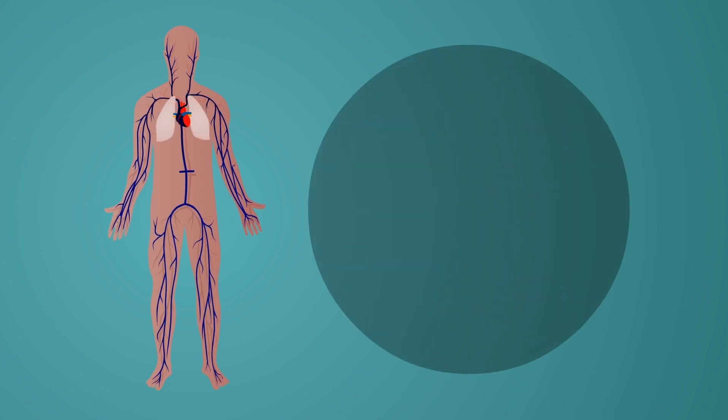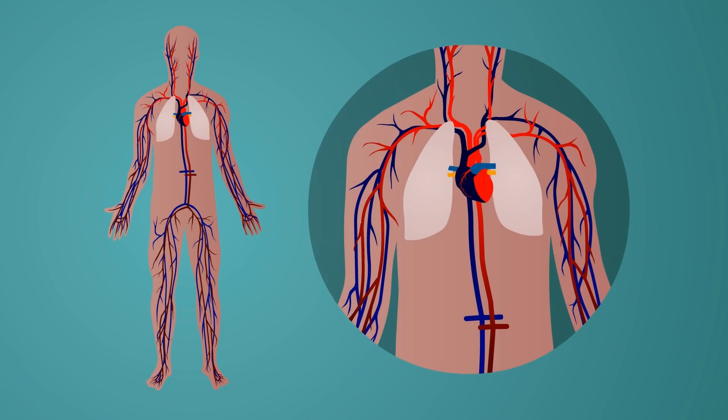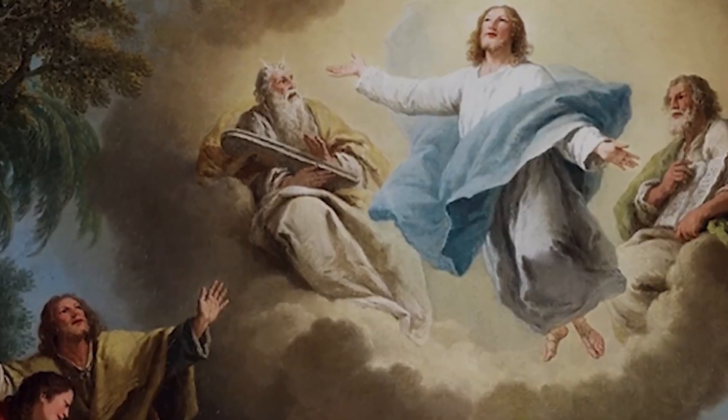This directly contradicts the claims of Ron Wyatt, an amateur archaeologist who alleged he found the Ark of the Covenant along with Jesus' blood. Wyatt claimed that the blood he found contained only one set of chromosomes, unlike any other human, and that the blood was still alive and functioning even 2,000 years after Jesus' death.